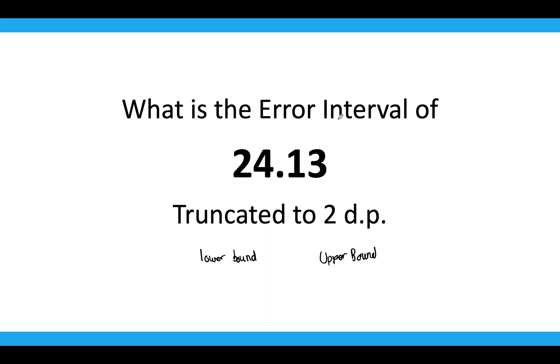And we have, let's call this number y. So we have y and then we have our signs, the same as normal. And we know that y over here is 24.13. So what would be the lower bound if we're truncating the number?